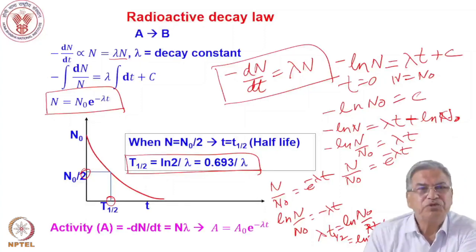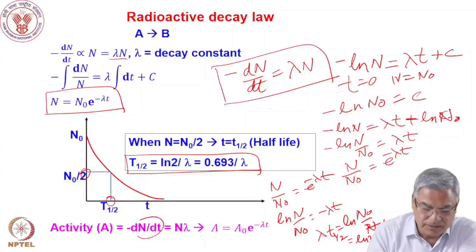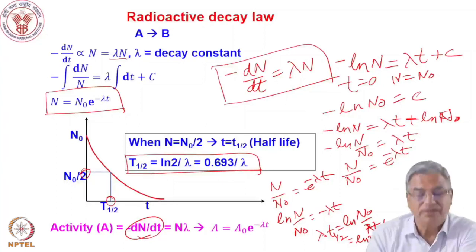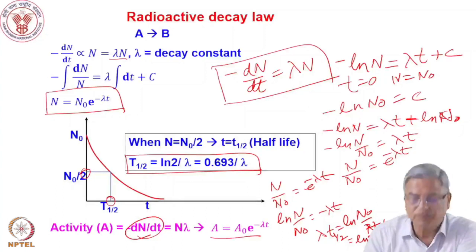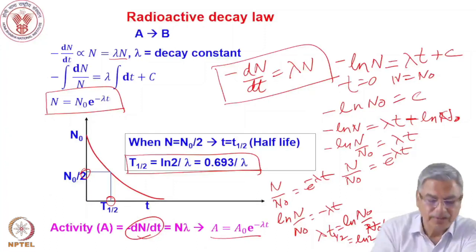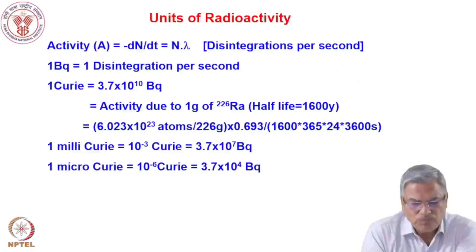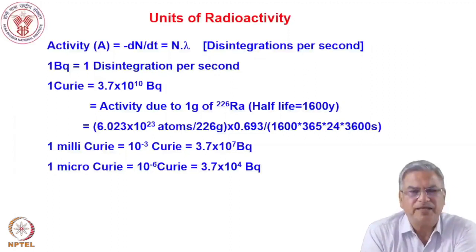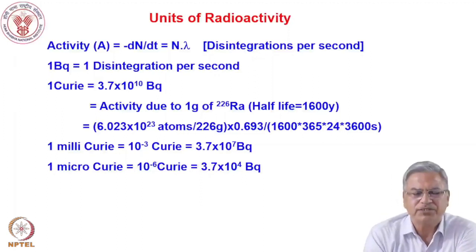Most of the time we do not determine the number of atoms directly — we determine the activity. Activity is the number of atoms decaying per unit time: −dN/dt = λN. So activity A = A₀ e^(−λt), and plotting activity as a function of time also gives an exponential decay since λ is constant. In practice, our detector system gives counts per second, which we convert to activity using detection efficiency and other factors.